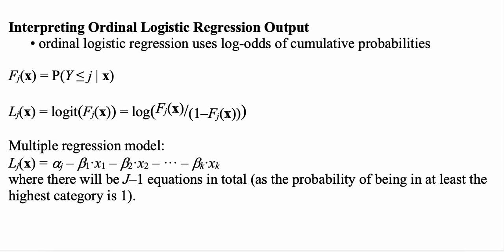An important point is that in these equations we subtract the model estimate values. This relates to the fact that in ordinal probit we compared y* to tau cuts; a similar idea applies here. Because we have reversed the direction compared to binary logistic regression, the signs change accordingly. Most software packages report the output in this sign convention because it makes interpretation of the relationship between independent variables and the ordered categories more intuitive.